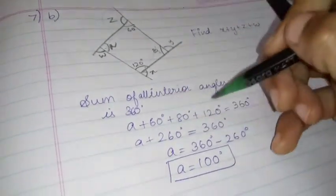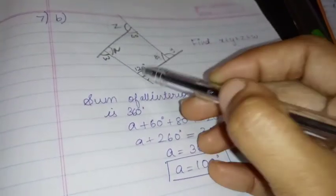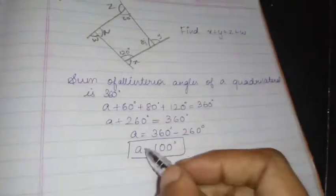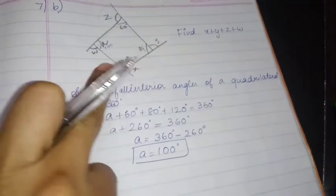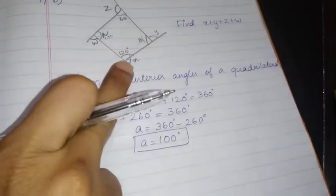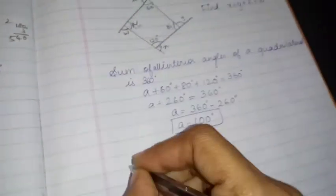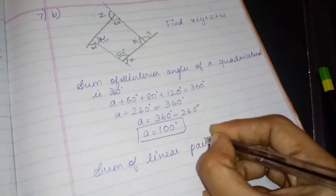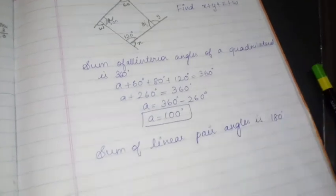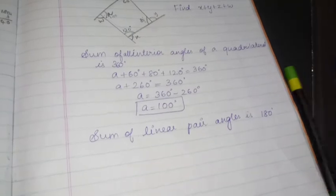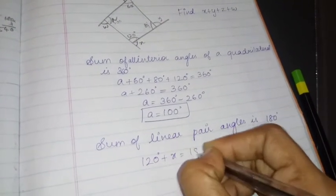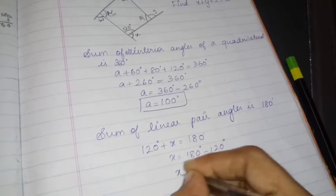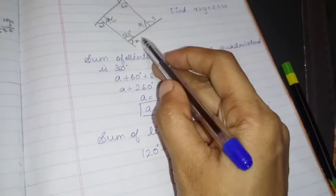A plus 60 plus 80 plus 120 is 360, so A value is 100 degrees. Now X and 120 is a linear pair. Sum of linear pair angles is 180. So 120 plus X is equal to 180. X is equal to 180 minus 120, which is 60 degrees. What is the value of X? 60 degrees.